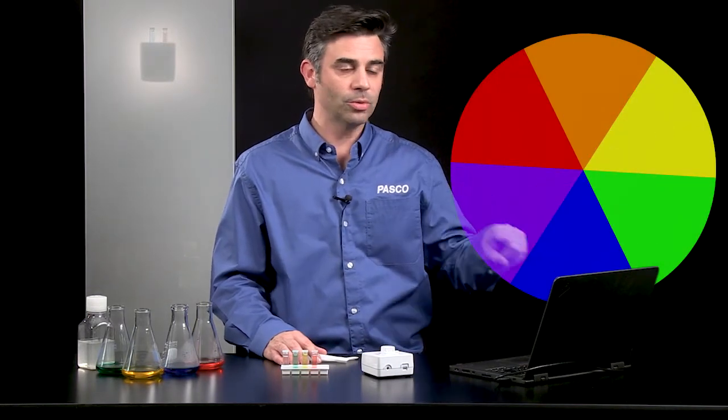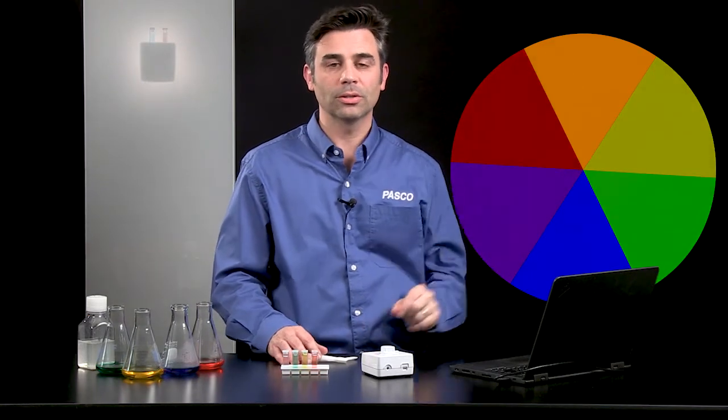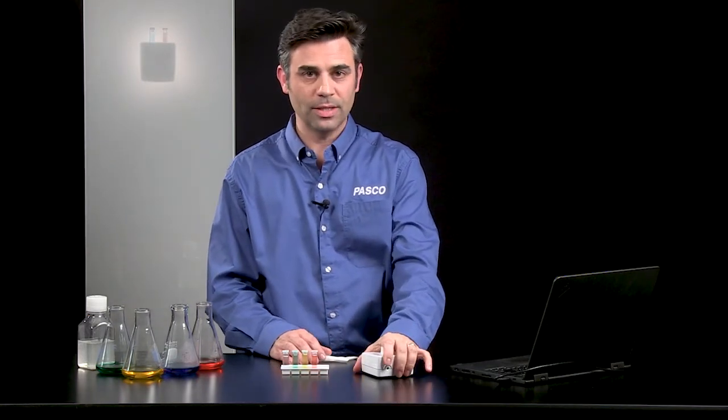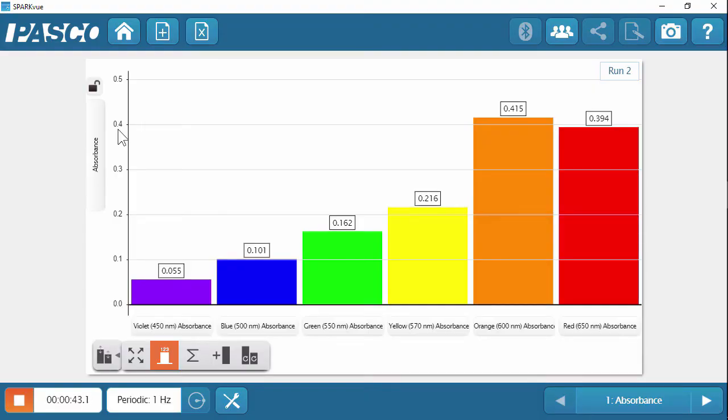So if you think about a color wheel, red, orange, yellow, green, blue, and violet, blue and orange are complementary colors. The reason this appears blue is because it's not absorbing blue. It's absorbing mostly the complementary color to blue, which is orange.